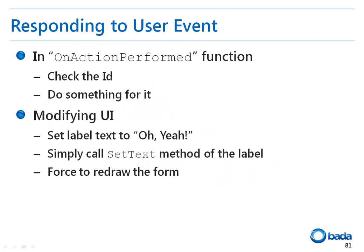Let's have a look at the part to handle the event when the button is pressed. Since a listener is registered to the button and the button is pressed, the onActionPerformed function of the listener is called. The onActionPerformed function checks the action ID of the event and performs an operation based on the ID. In this example, we will change the text of the label to 'oh yeah'. To change the text of the label, we will use the setText function. Finally, to display the label on the screen, we will call the redraw function of the form.